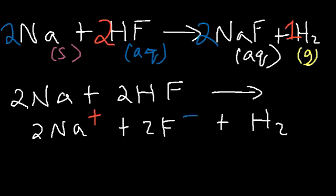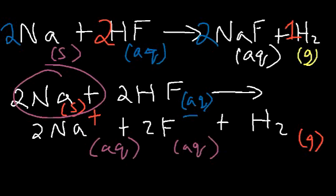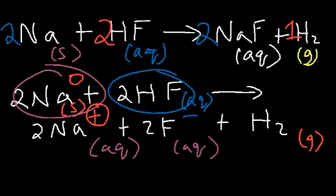Sodium is in the solid phase, hydrogen is in the gaseous phase, HF is aqueous, and the other two ions are in the aqueous phase. Sodium metal is the reducing agent — it was oxidized from 0 to plus 1. HF is the oxidizing agent — the hydrogen in HF went from plus 1 to 0, so HF was reduced. That is it for this video. Thanks for watching and have a great day.